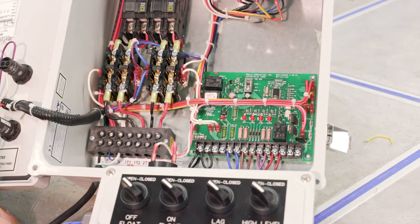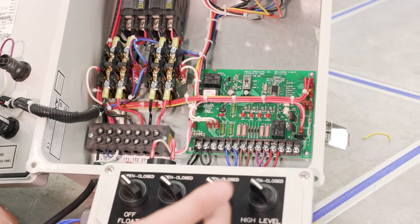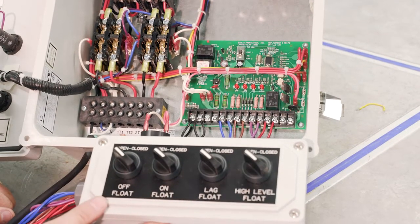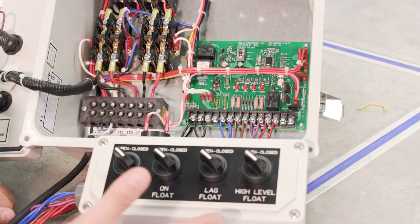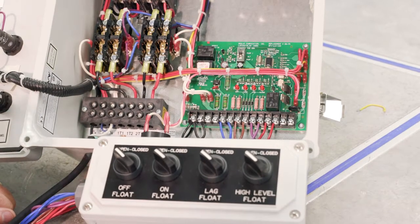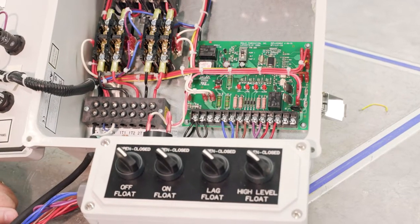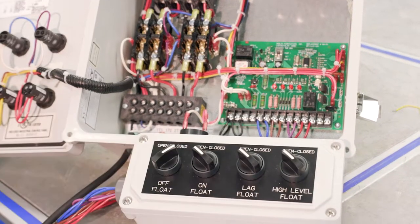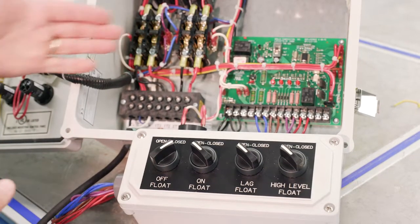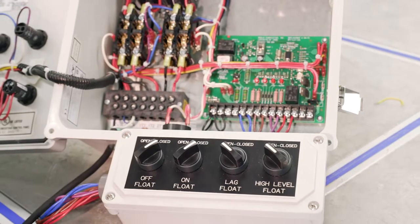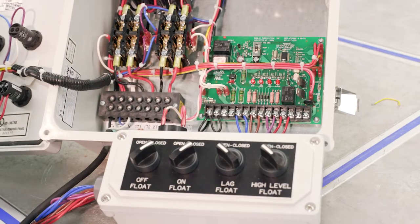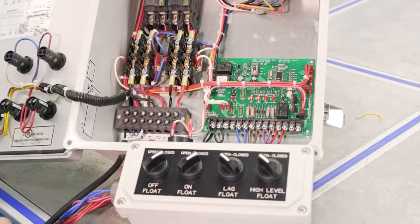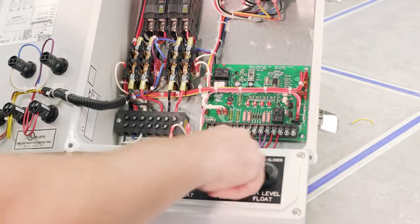One last scenario is lag pump does not keep up and it gets to the high level float. So it's going to get a little noisy, the alarm should come on, the buzzer should come on, and so let's go through that one last scenario. Off float, nothing happens other than the light. On float, it's alternating again. So pump one is on, can't keep up, gets to the lag float.